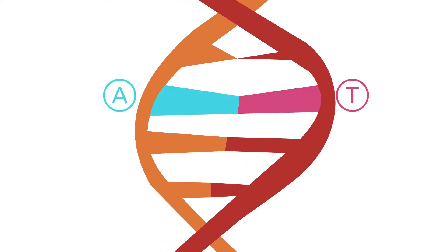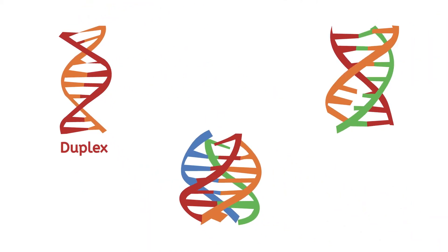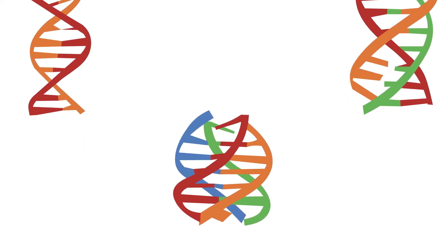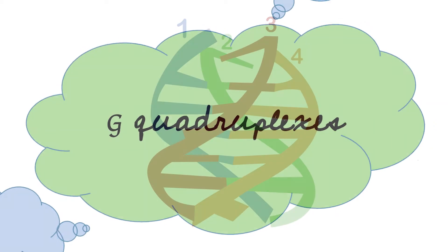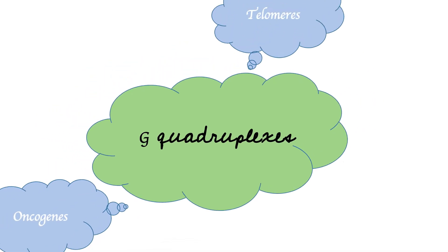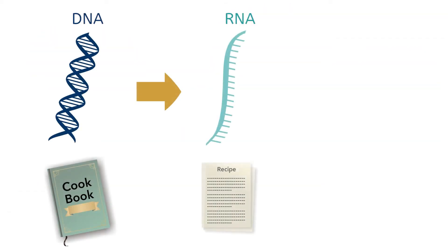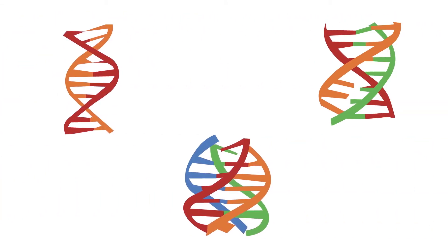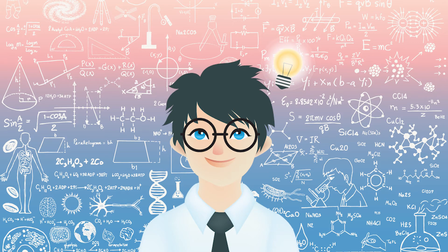The four bases are called adenine, thymine, guanine, and cytosine. Apart from the classical geometry, DNA also exists in several other non-canonical structures, one of which is the G-quadruplex — a structure with four strands. These structures have been found to play a wide range of physiological roles, including in all the processes of the central dogma, the process by which instructions coded on DNA are converted into proteins.